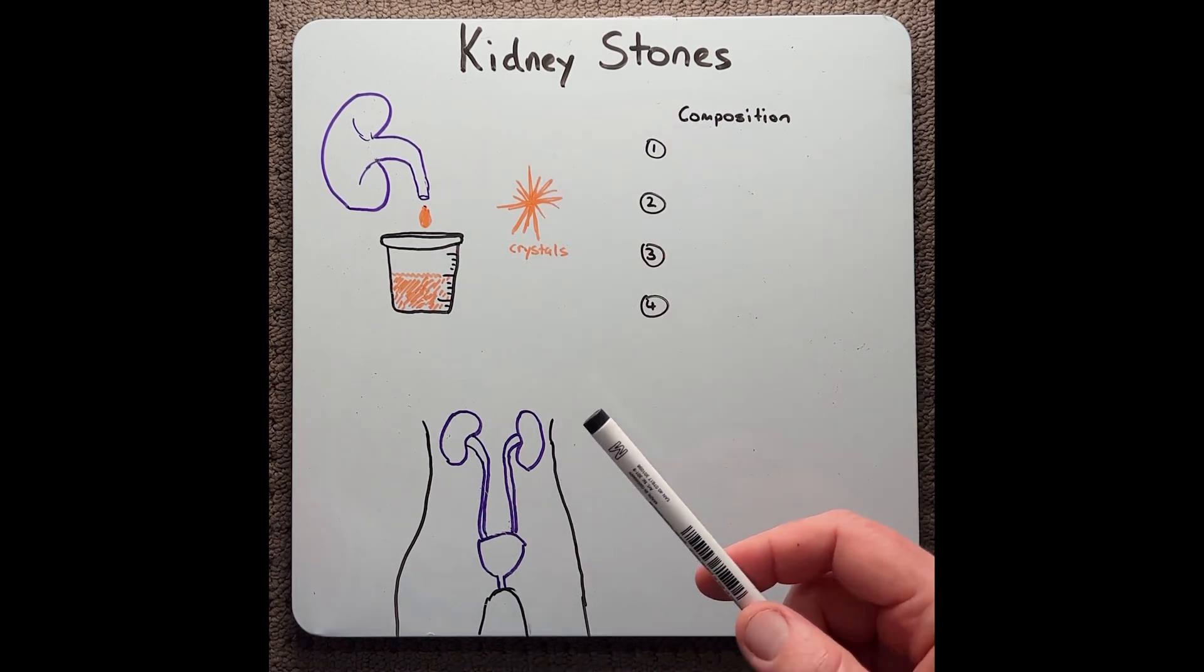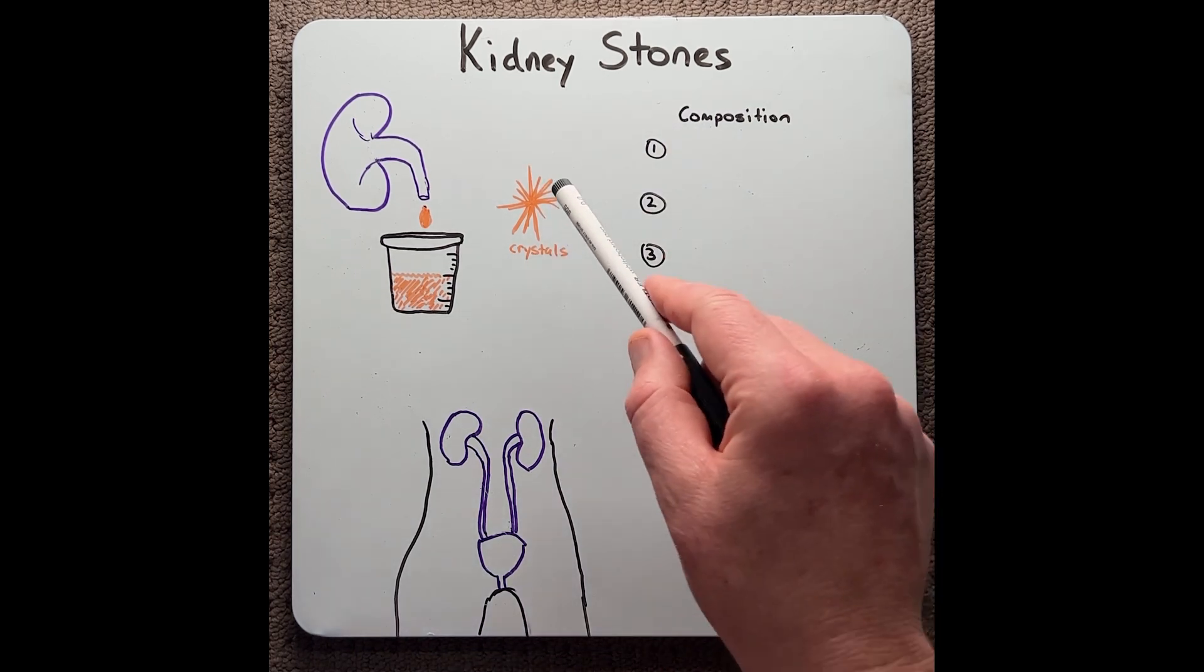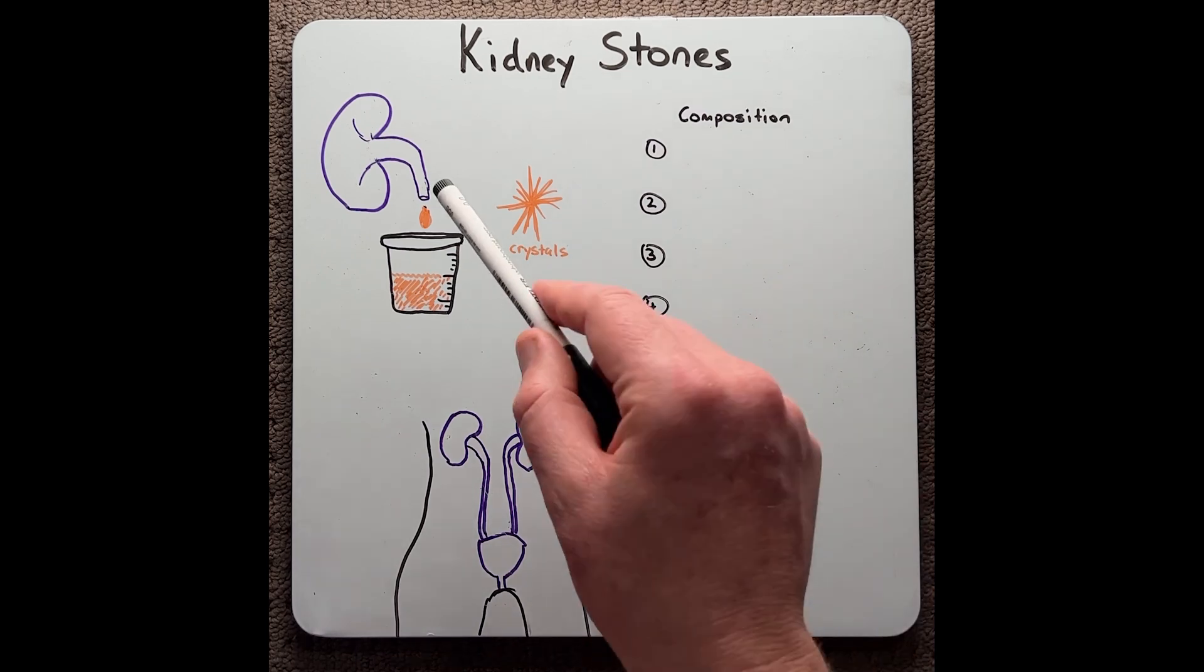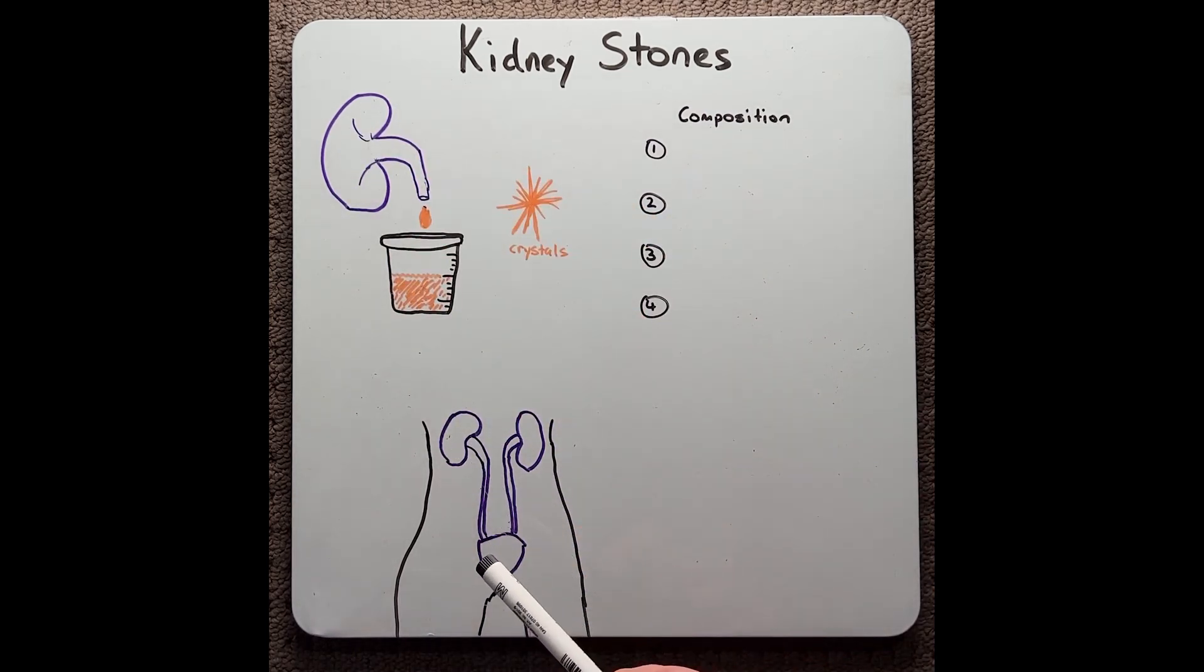Kidney stones, also known as renal caculae or nephrolithiasis, are hard crystals or deposits that form within the kidneys or the urinary tract.